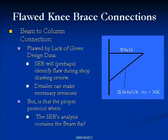If this goes to the engineer of record on a shop sheet and the connection is flawed, the SER will probably find it — right? One engineer called out: no, we're not going to find that. This is a small appendage in what might be a package of hundreds of shop sheets. But is it the proper protocol when the SER's analysis already has the beam axial load in the model? Why didn't it appear on the drawing? It might have been a last-minute appendage, but assuming it was modeled, he's got that axial load.